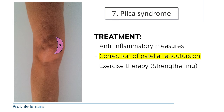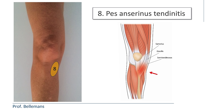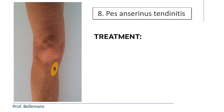8. Pes anserinus tendinitis. In pes anserinus tendinitis, the pain is located somewhat lower than in plica syndrome. Both conditions can occur at the same time because they are frequently caused by the same mechanism — the inward position of the kneecaps, also called patellar endotorsion. The treatment is therefore almost identical: anti-inflammatory measures, correction of patellar endotorsion, and exercise therapy with a physiotherapist.